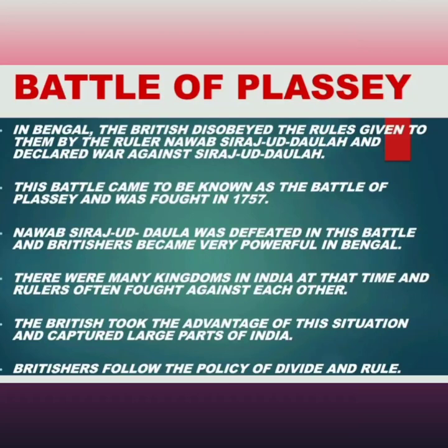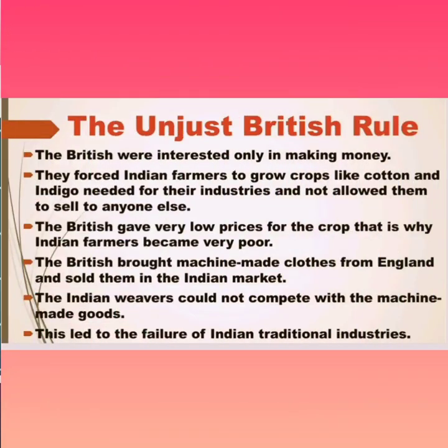There were many kingdoms in India at that time and rulers often fought against each other. The British took advantage of this situation and captured large parts of India. The British were interested only in making money. They forced Indian farmers to grow crops like cotton and indigo needed for their industries and did not allow them to sell to anyone else. The British gave very low prices for the crops, and that is why Indian farmers became very poor.